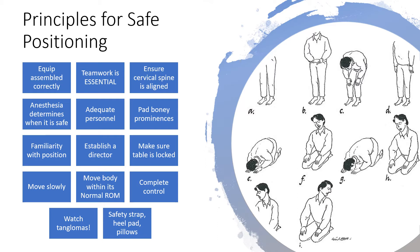Make sure fingers are clear before moving the table, both when positioning and repositioning. Any straps placed on the patient should not cause compression injury — the safety strap goes two inches above the knees, snug but with room for a couple of fingers underneath. The heels should not rest directly on the table; use foam or gel pads under the heels. If the patient is in supine or a variation, placing a pillow under the knees helps take pressure off the lower spine.